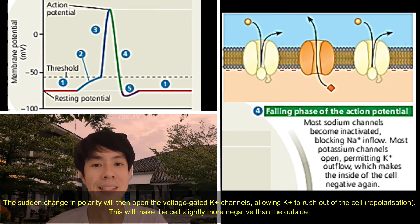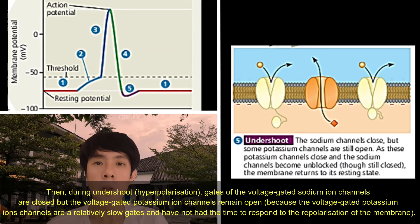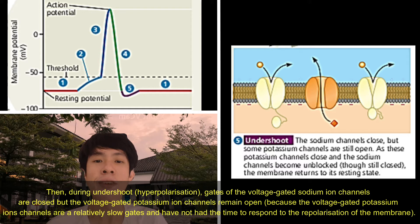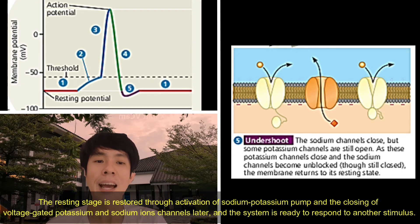This will make the cell slightly more negative than the outside. Then, during undershoot hyperpolarisation, the gates of the voltage-gated sodium ion channels are closed, but the voltage-gated potassium ion channels remain open, because they are a relatively slow gate and have not had time to respond to the repolarisation of the membrane. The resting stage is restored through activation of the sodium-potassium pump and the closing of voltage-gated potassium and sodium ion channels, and the system is ready to respond to another stimulus.